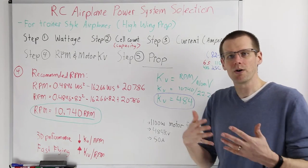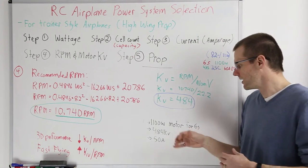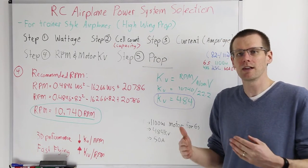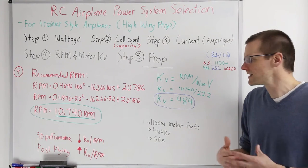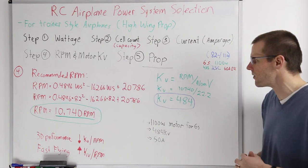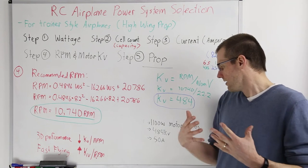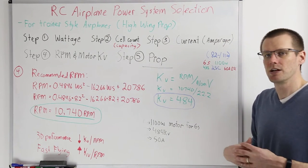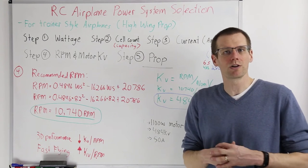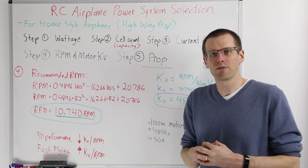To summarize our motor selection: we need a motor rated for 1,100 watts capable of running on a 6S battery pack — verify the manufacturer specs allow RPM up to around 11,000–12,000. Check that the motor is rated for 50 amps and 1,100 watts continuous. If the RPM spec says maximum 15,000 RPM, we have good headroom. The target KV is 484, and the motor must be rated for 50 amps.